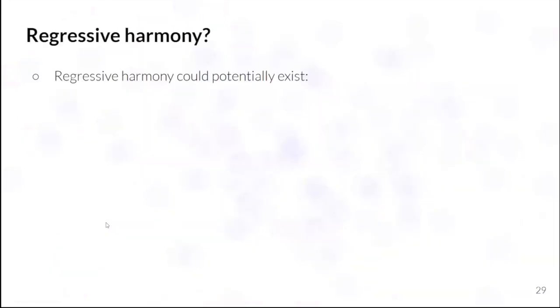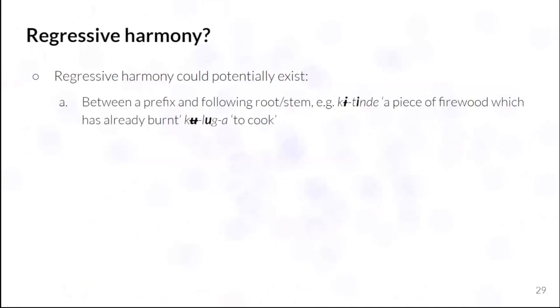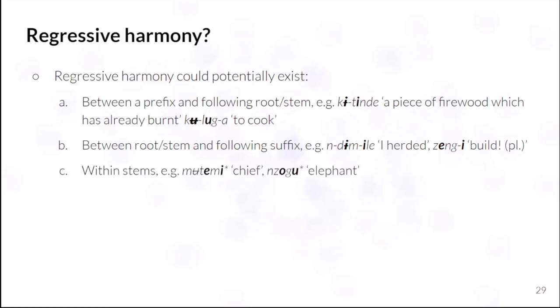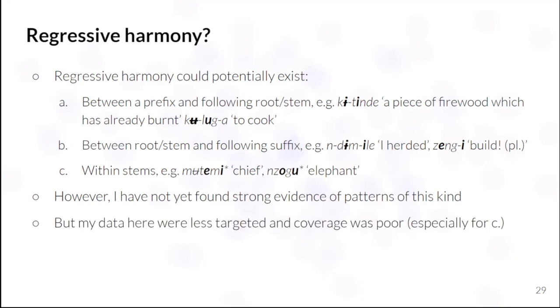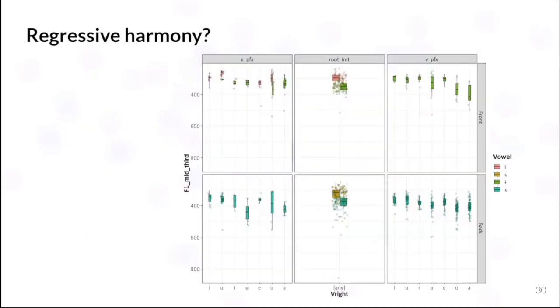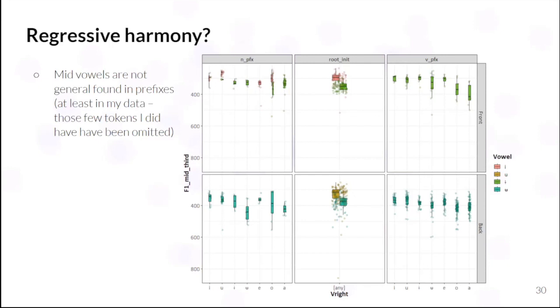And then regressive harmony. So, we might potentially find regressive harmony between, say, prefixes and following roots, between roots and following suffixes, or roots and stems and following suffixes, and then potentially within stems. But I, in my examination of my data so far, have not found any strong evidence of patterns of this kind. But I should say that my data here were far less targeted and coverage was poor, especially for within stems. And so, if I show you examples here of noun and verb prefixes as compared to the same vowel qualities in root initial position, well, first of all, I should say that mid-vowels are not generally found in prefixes, at least as far as I'm able to glean from my data.